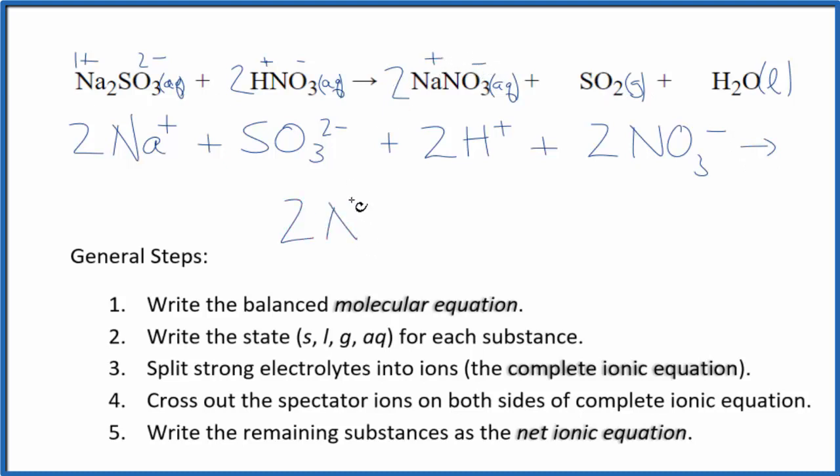For the products, we have the positive and the negative here. So again, two sodium ions (Na+) and two of the nitrate ions. We don't split gases or liquids apart in net ionic equations, so we're just going to write those as they are. And now we have the complete ionic equation.